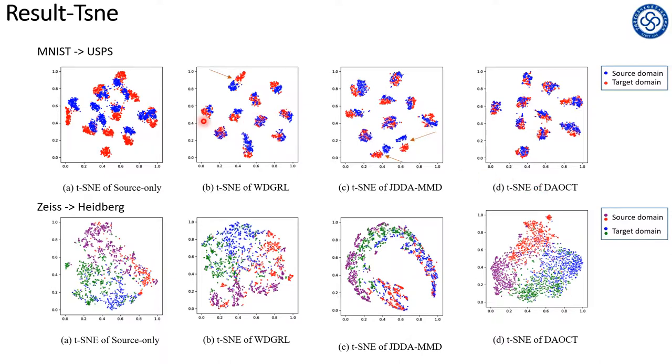We plot the t-SNE visualization of the digit classification tasks to analyze the representations distribution. Shown as the first row, where the red and blue spots represent the source and target domain separately, and each cluster represents a category.